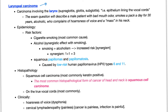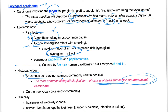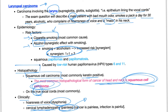Laryngeal carcinoma is a cancer of the head and neck. Cigarette smoking and alcohol are the main risk factors — number one is cigarette, number two is alcohol. If you have both, that is synergism, significantly increasing the risk of laryngeal carcinoma. Your exam question will describe a male with bad mouth odor who smokes a pack a day for 30 years, is alcoholic, and complains of hoarseness of voice and a neck mass. Histopathology: squamous cell carcinoma, usually keratin positive, occurring on the true vocal cord. Clinically: dysphonia and cervical lymphadenopathy. Remember — cancer is painless; infection is painful.